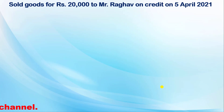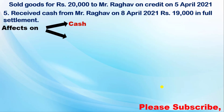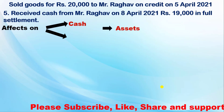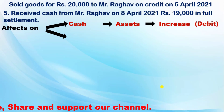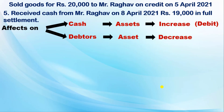In the next case, Mr. Raghav, who had bought goods on credit, now pays on 8th April 2021. We receive 19,000. You debit cash account because you received cash — asset increases, so debit. Mr. Raghav, who is a debtor, decreases because you now receive payment, so you credit the debtors account.